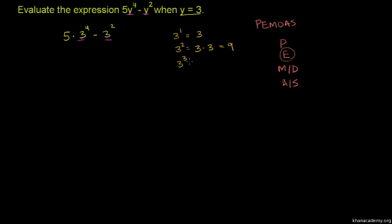3 to the 3rd power is 3 times 3 times 3. Or you can think of it as 3 squared times 3. So 3 times 3 is 9, times 3 equals 27.